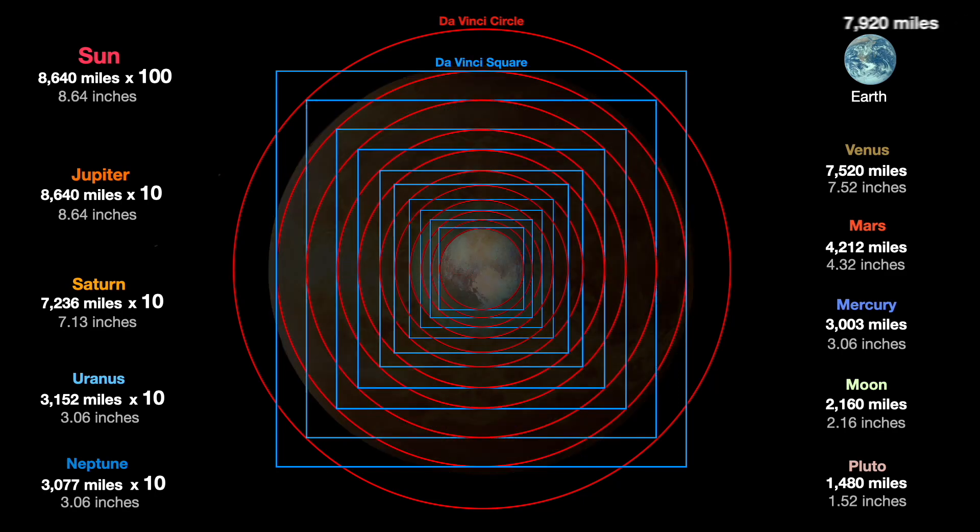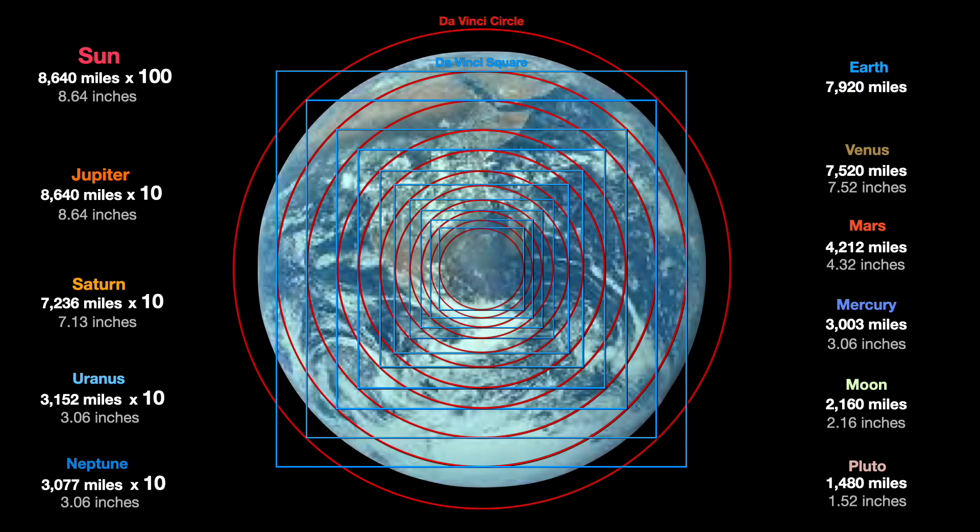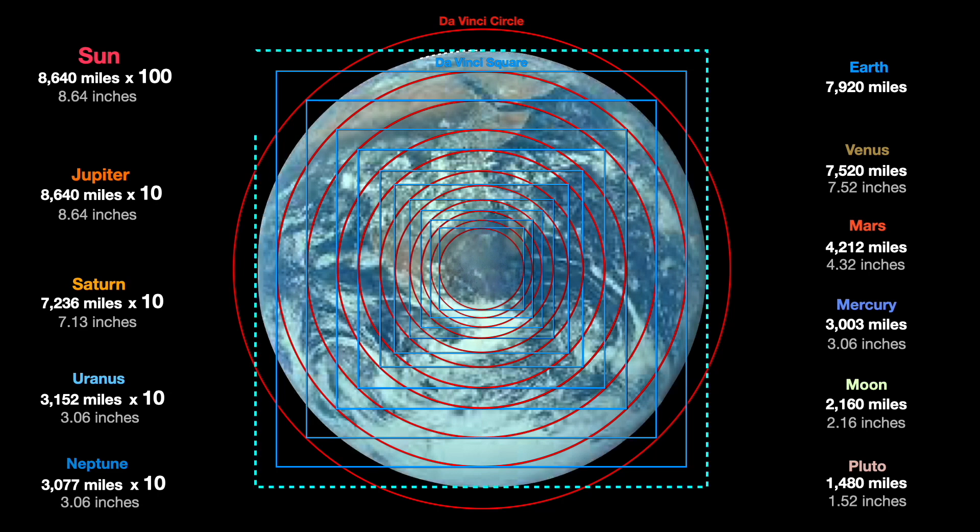And now we come home. Earth. And she doesn't seem to fit the pattern either. But does she? We could draw a circle around her, but since Venus gave us an interesting solution by comparing her circle with a square, let's draw a square around Earth and compare her again to Venus.